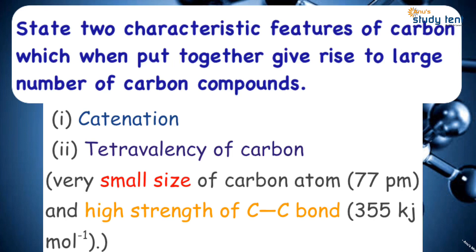The second reason is carbon's 4 valences — that is tetravalency. Carbon is small in size and forms carbon-carbon covalent bonds of greater strength. These two properties — catenation and tetravalency — explain the versatility of carbon.